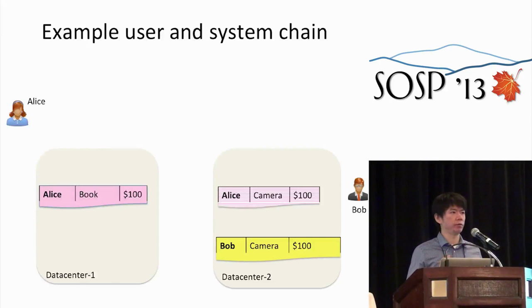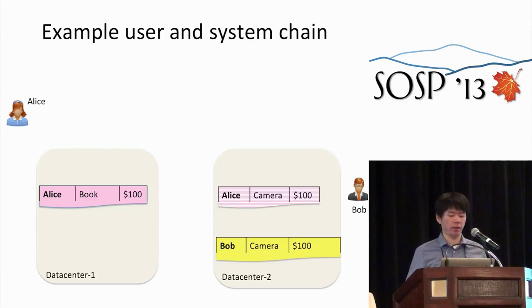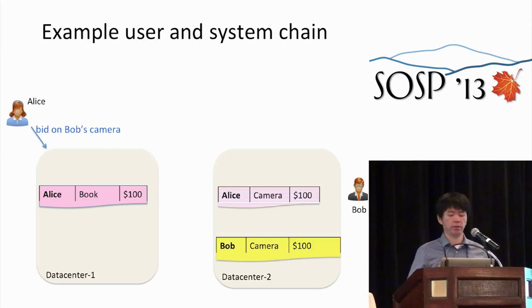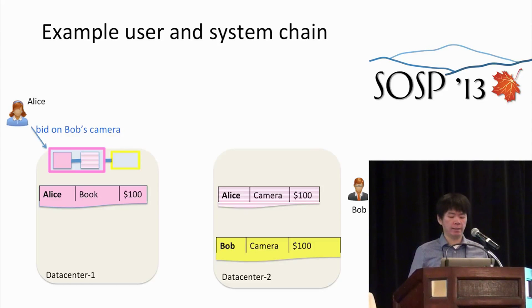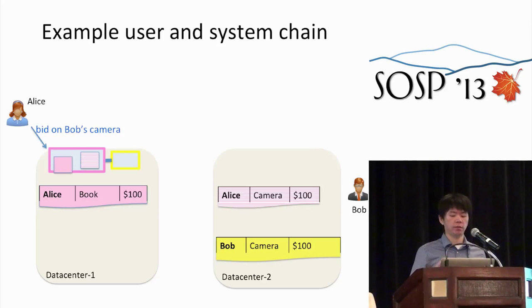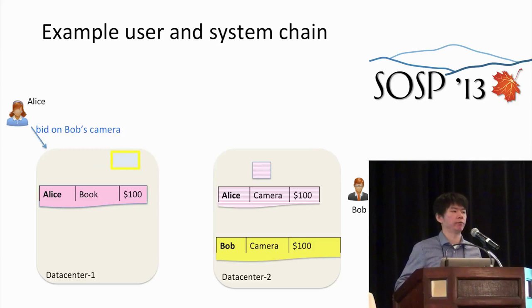Let's see how user chains and system chains work together in the auction example. When Alice puts a bid on Bob's camera, the system generates a user chain with two steps: inserting into Alice's bid table and then updating Bob's item. Since we have a secondary index on the bids table, the first hop is automatically expanded to include a system subchain that first inserts into the base bids table and then inserts into the secondary index of the bids table. This animation shows how the hops are carried out one by one in different data centers.